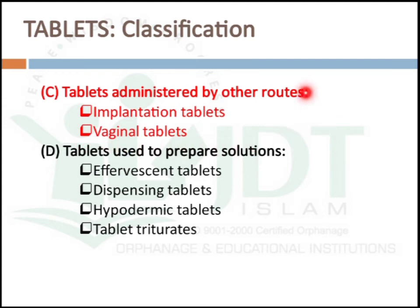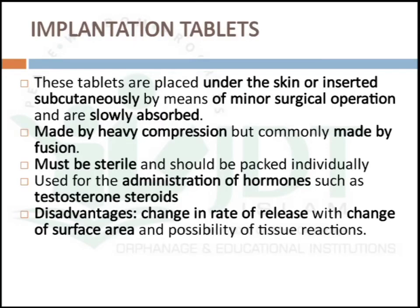The next group is tablets administered by other routes, like implantation tablets and vaginal tablets. Implantation tablets are placed under the skin or inserted subcutaneously by means of a minor surgical operation, releasing and absorbing slowly. They are made by heavy compression or commonly by fusion method, must be sterile, and kept individually to maintain sterility. They are mainly used to administer hormones such as testosterone steroids. Disadvantages include changes in rate of release with change in surface area and possibility of tissue reactions, plus the need for minor surgery.